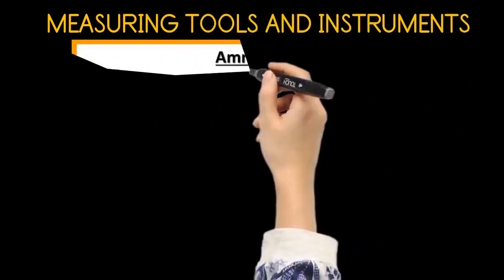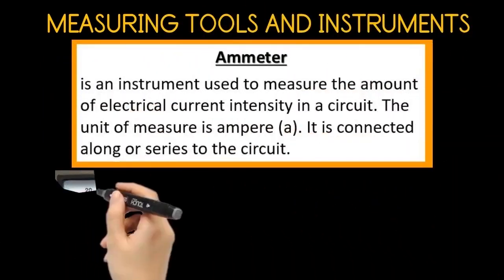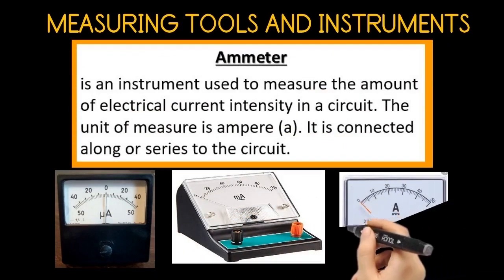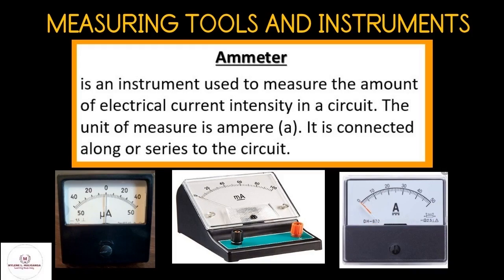The ammeter. The ammeter is an instrument used to measure the amount of electrical current intensity in a circuit. The unit of measure is ampere. It is connected along or series to the circuit.